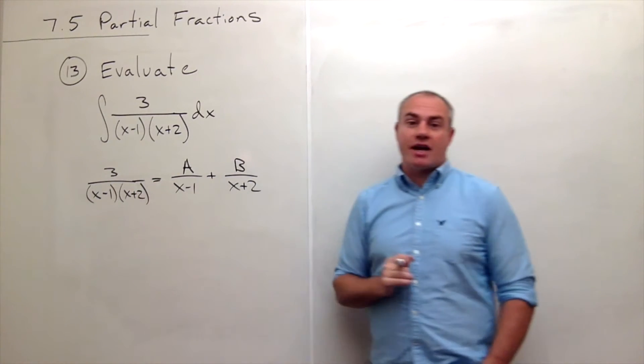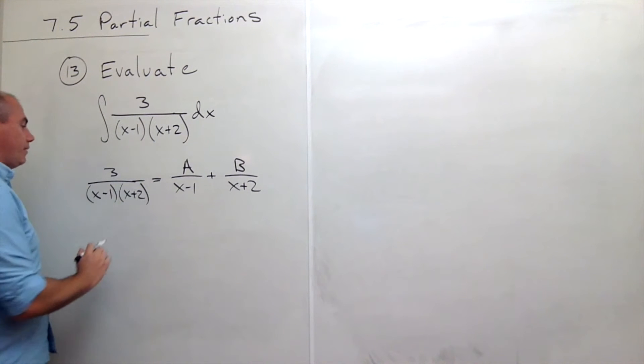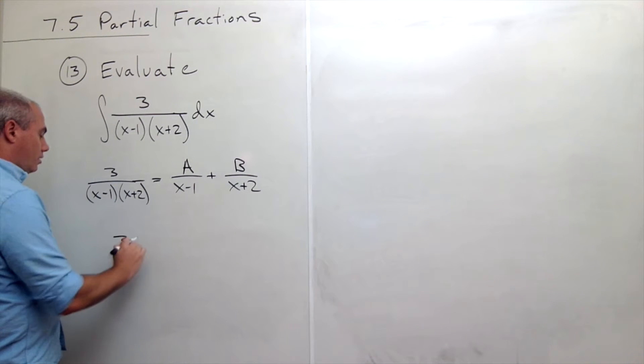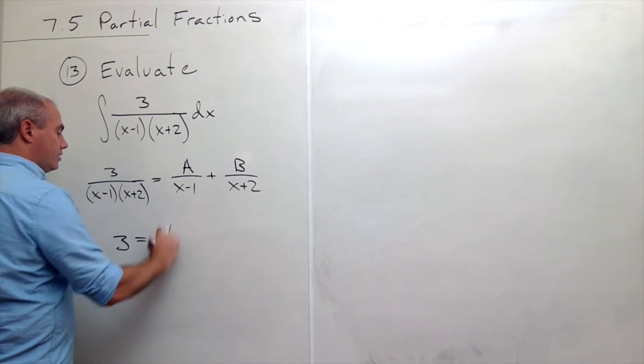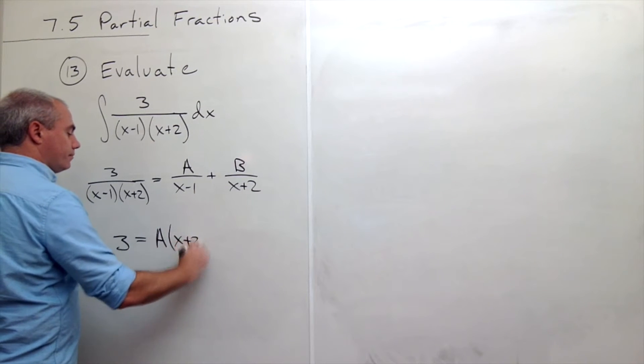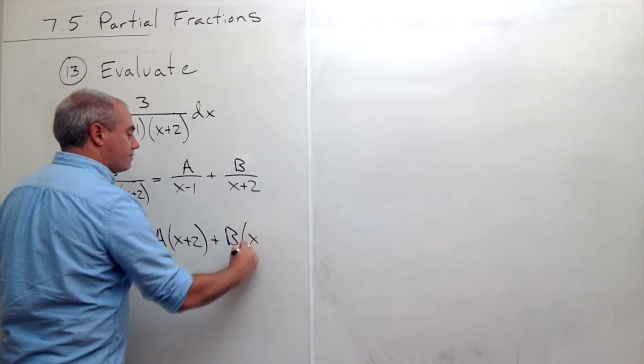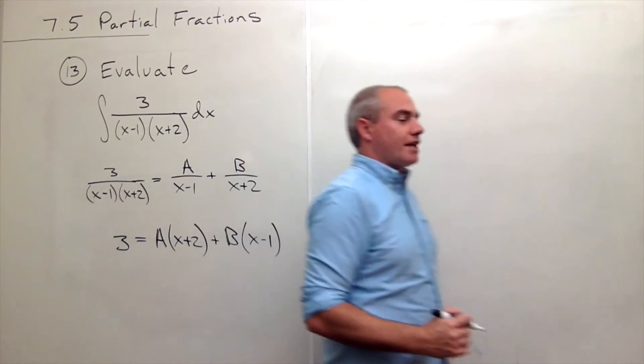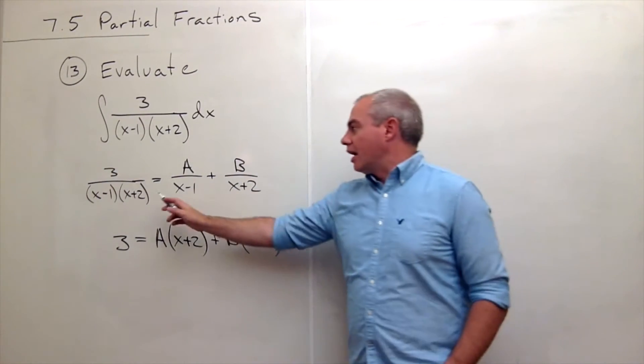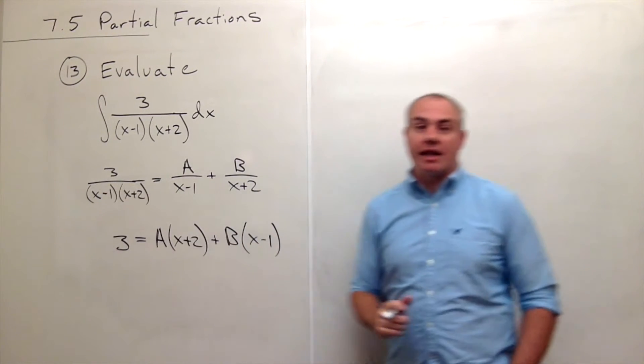Let's clear the fractions out. If I clear out the fractions, I get 3 on the left side, and on the right side I get A times x plus 2 plus B times x minus 1. That's the exact same equation, I just multiplied both sides by the denominator on the left.